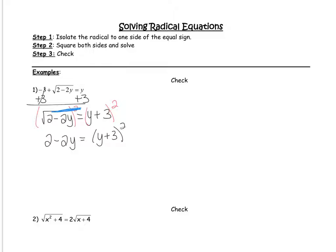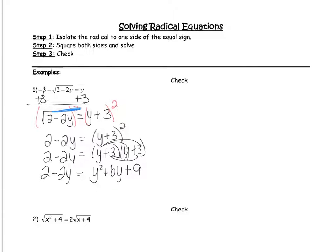We have 2 minus 2y equals y plus 3 squared. Do not just distribute the 2 — you must double distribute, so this is y plus 3 times y plus 3, which gives y squared plus 6y plus 9, equals 2 minus 2y. To solve for y, we need to get everything to one side because whenever I have a y squared equation I want to set it equal to zero so I can factor and solve. Subtracting 2 and adding 2y gives 0 equals y squared plus 8y plus 7.